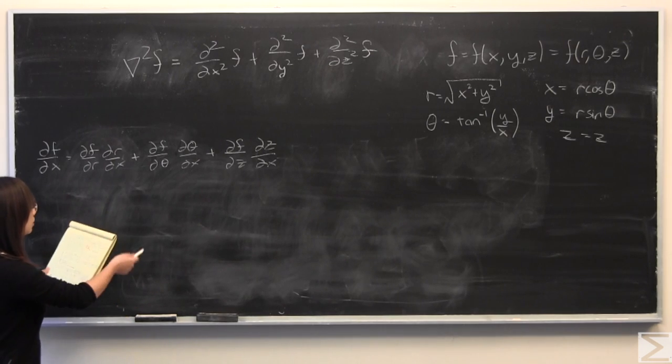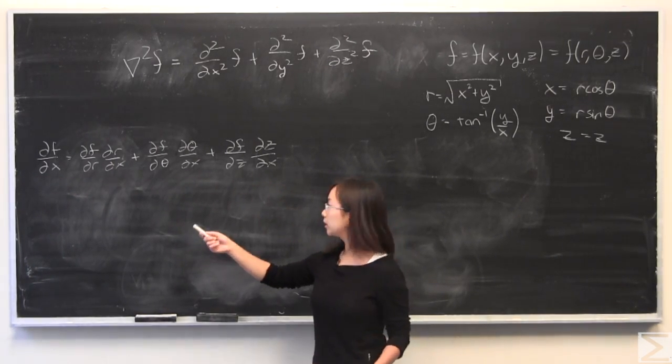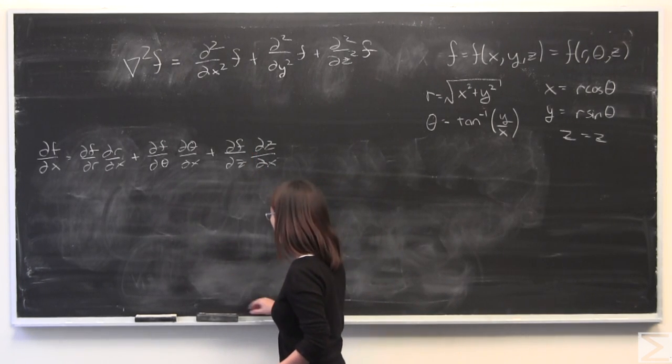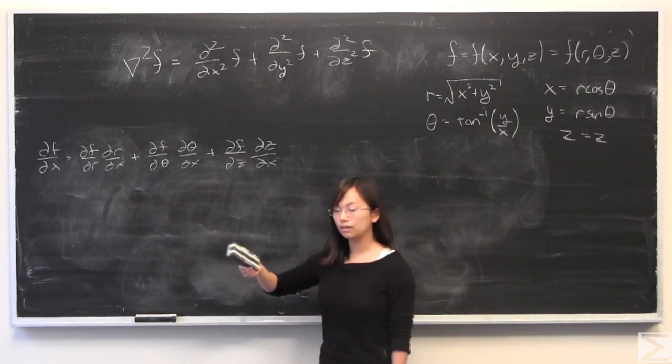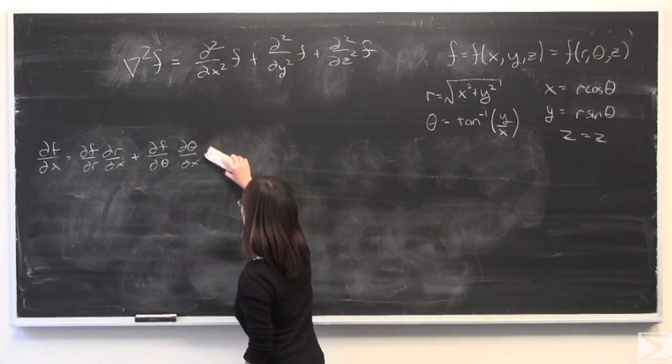If you carry that out, it looks like this. I'm already going to go ahead and strike this off because z has no dependence on x. Therefore, this is equal to 0.